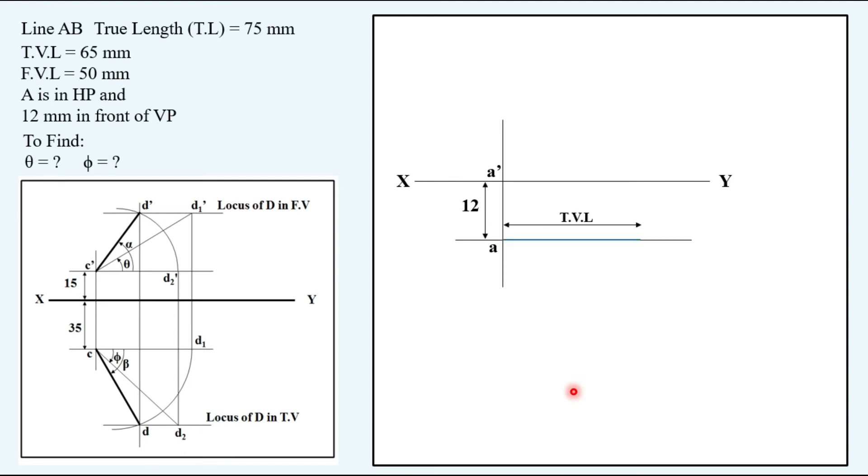Then you have to take the top view length that is 65 mm here parallel to XY line and naming the corresponding point. So here it was D1 for our reference. It will be B1 here.